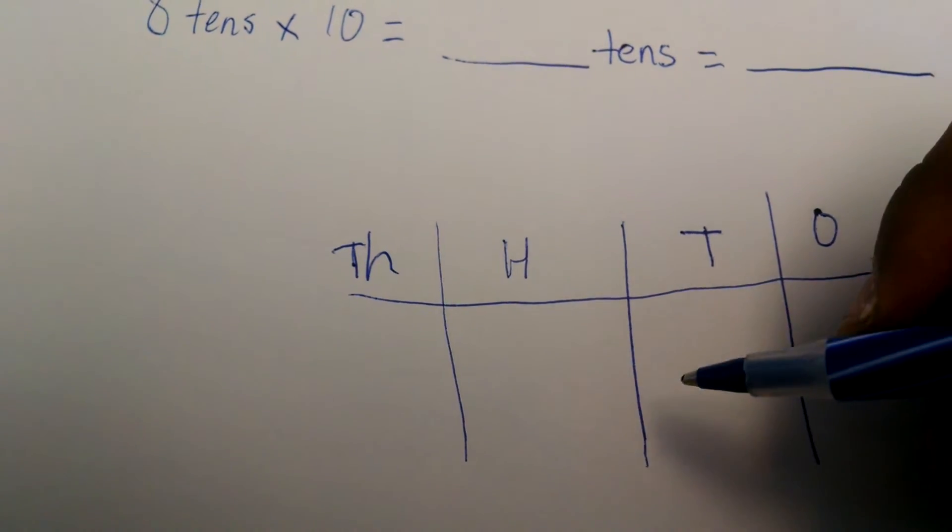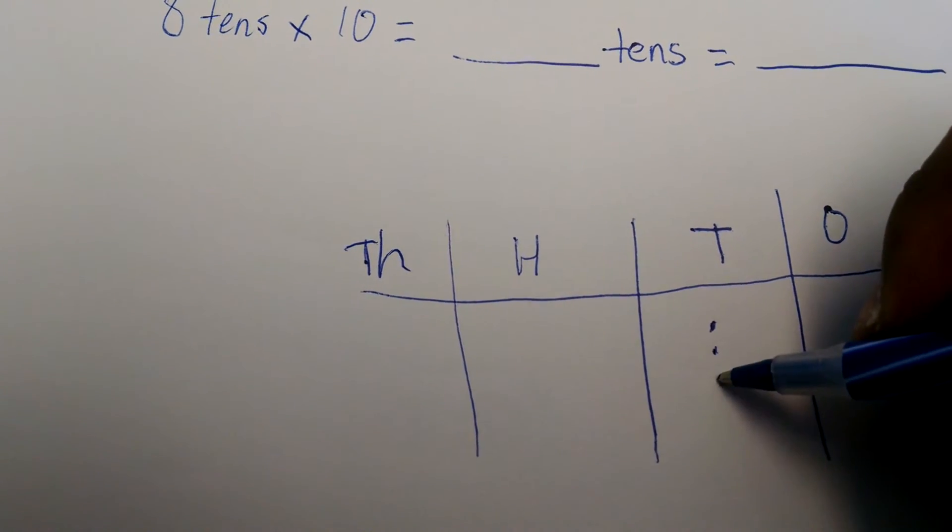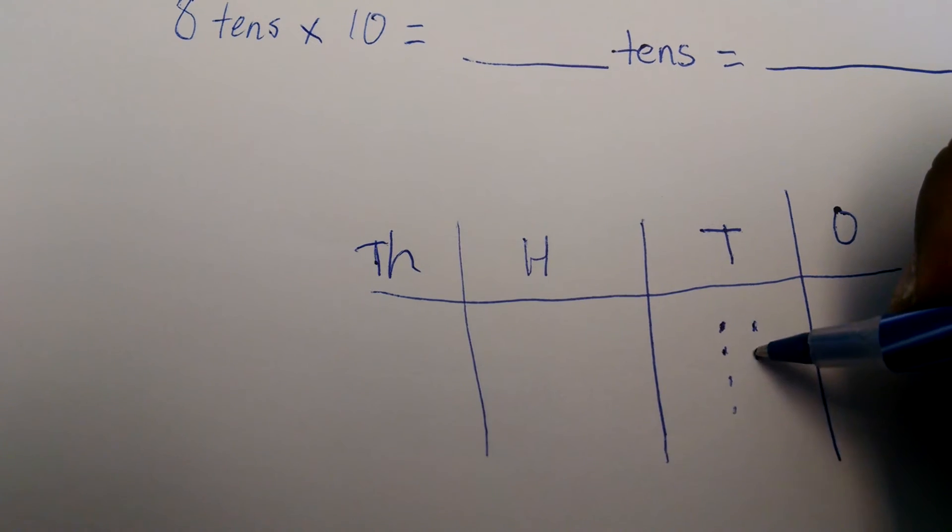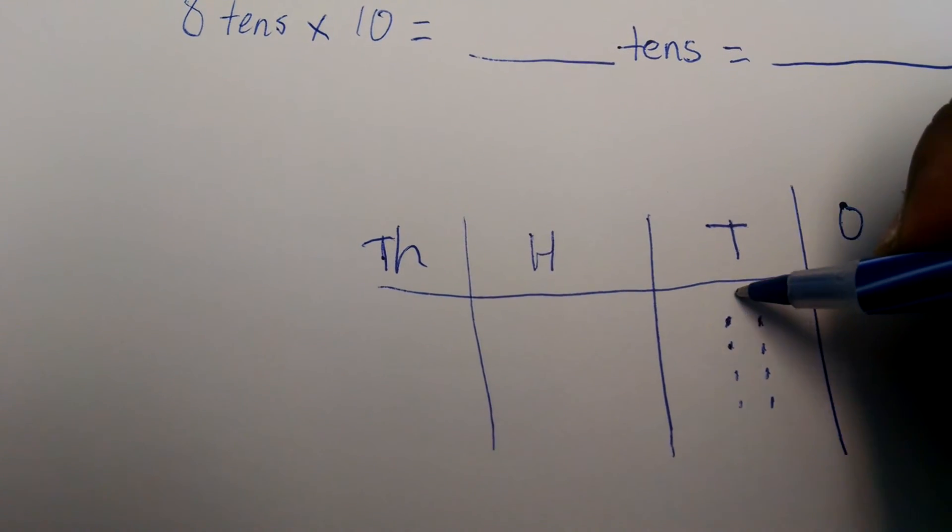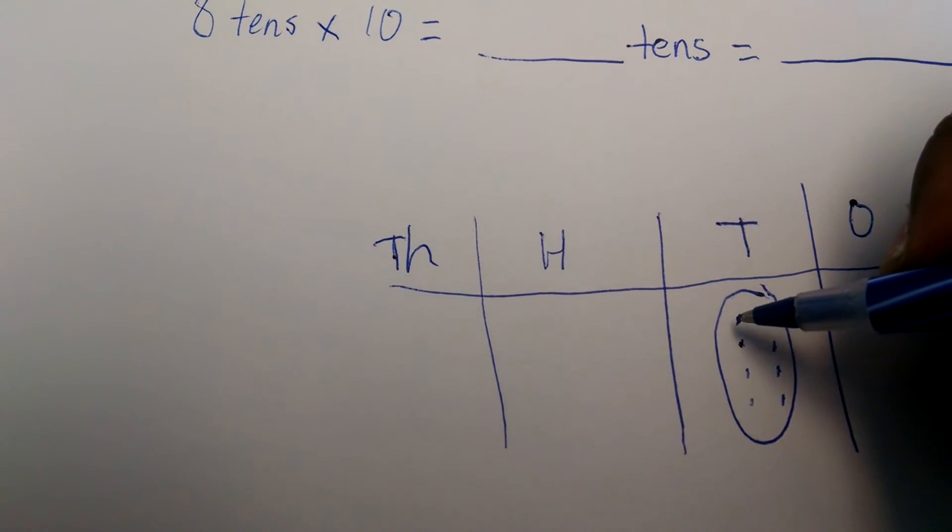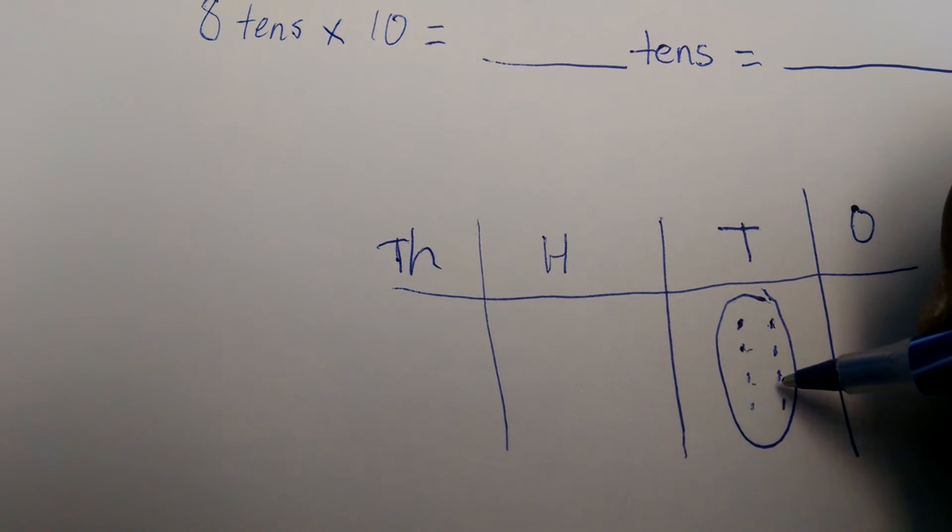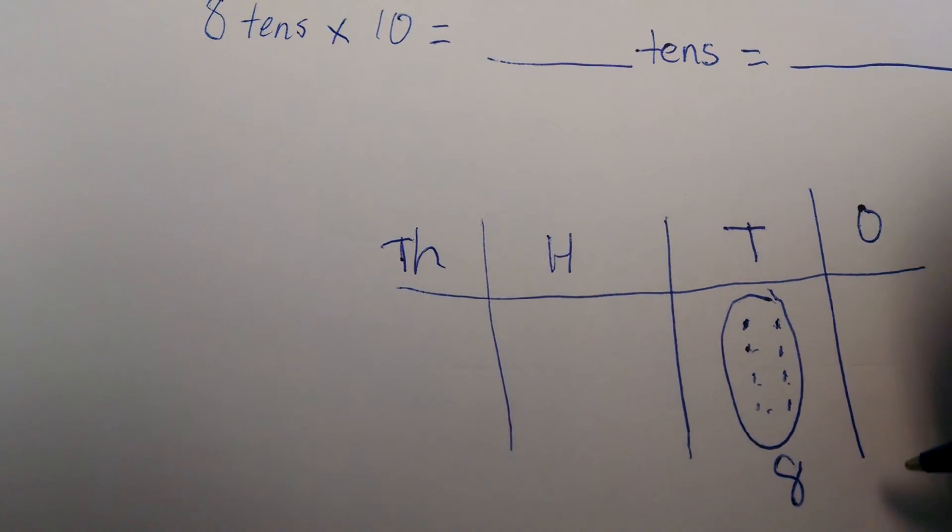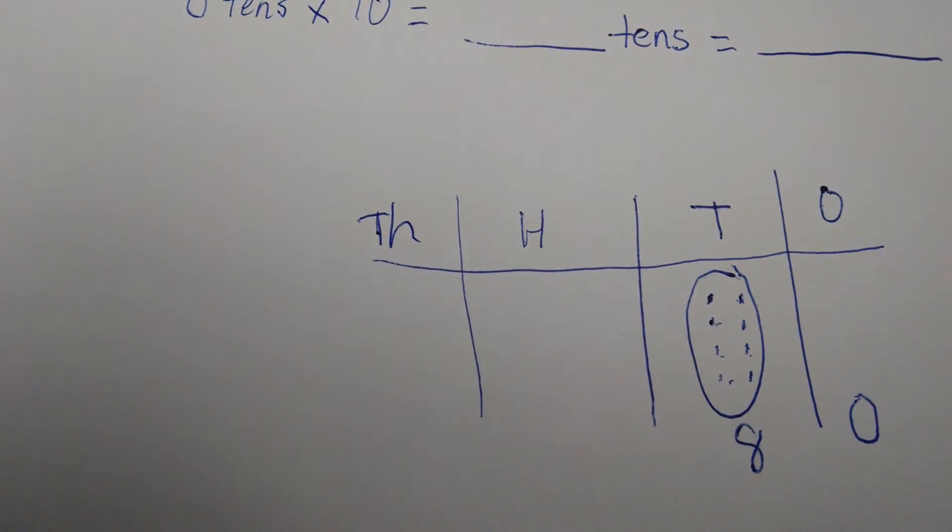So I have 8 tens. I'm going to draw a little disk to represent the tens. So that's 10, 20, 30, 40, 50, 60, 70, 80. So it's 80 dollars, 8 tens, times 10.